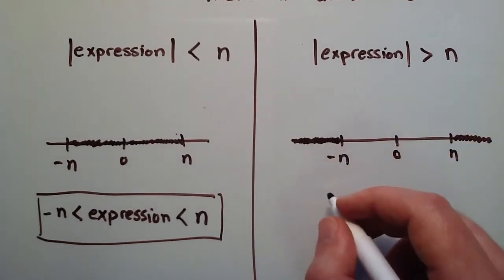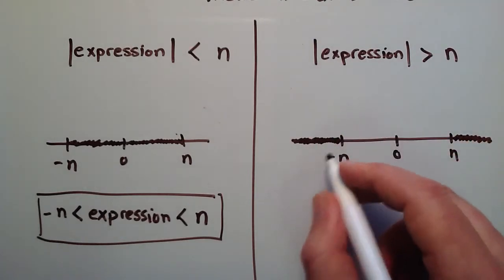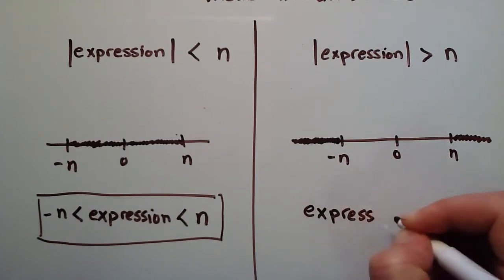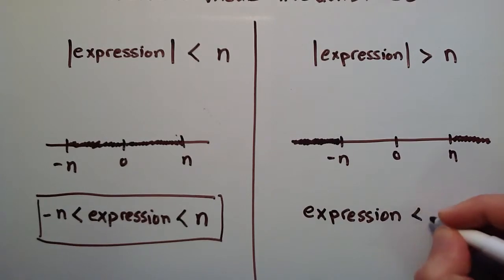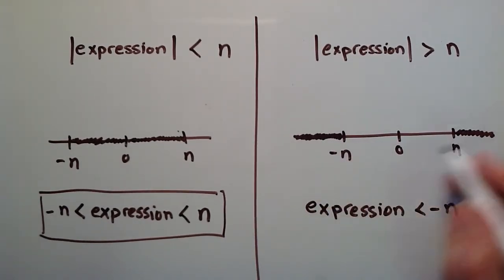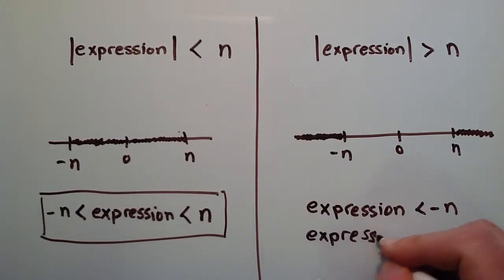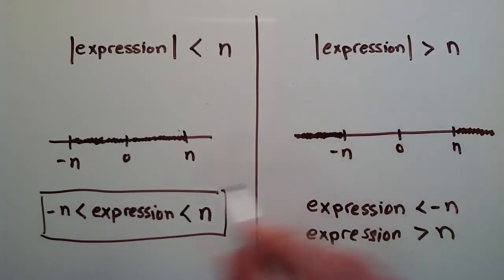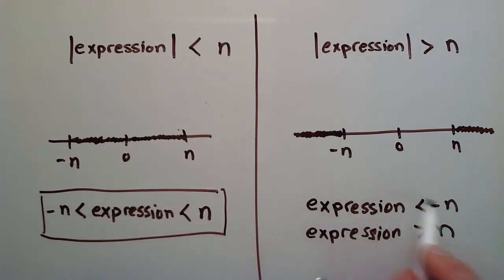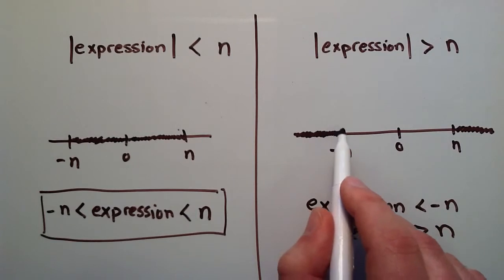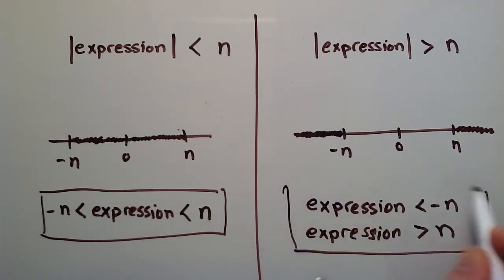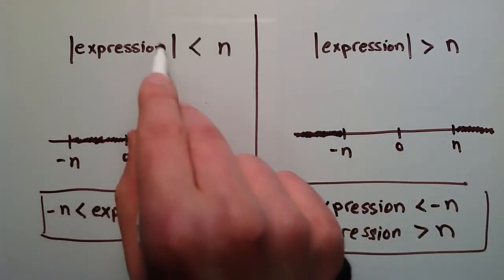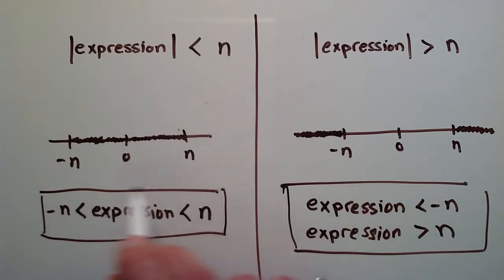For the greater-than type of absolute value inequality, the solution includes all values of the expression less than negative n, and also all values greater than positive n. So we have two separate parts — a union. This is unlike the less-than case which is one continuous chunk. If we have the absolute value of some expression greater than n, we get this split solution; if it's less than n, we get the single interval solution.